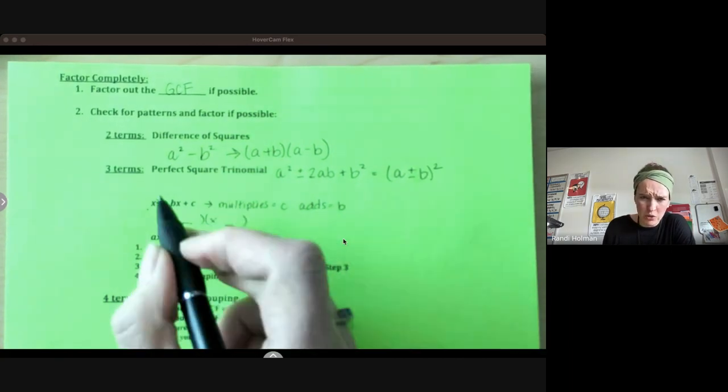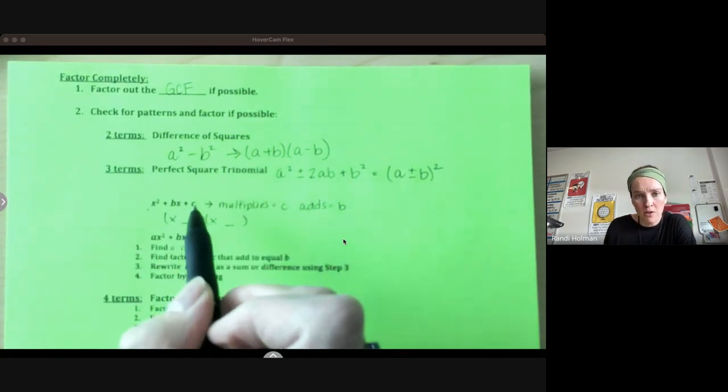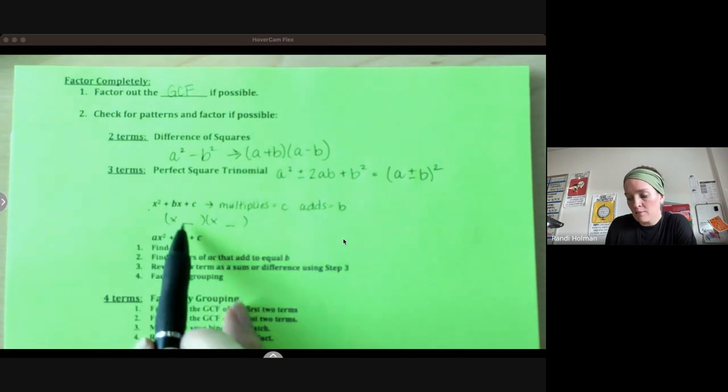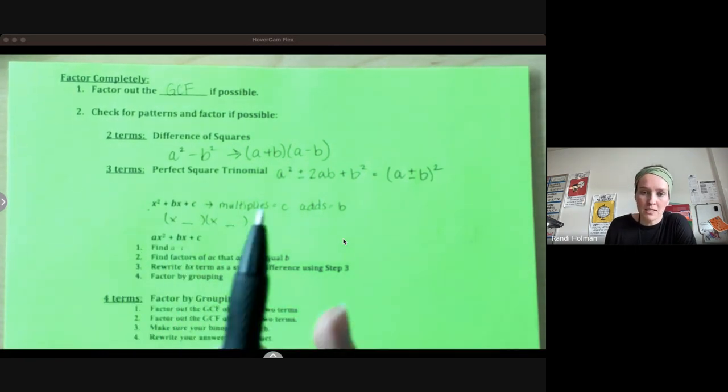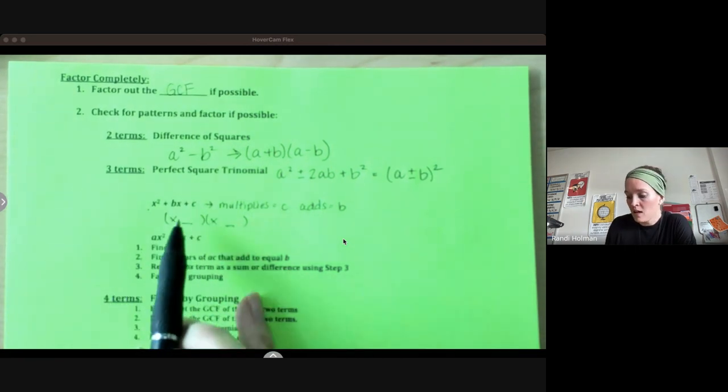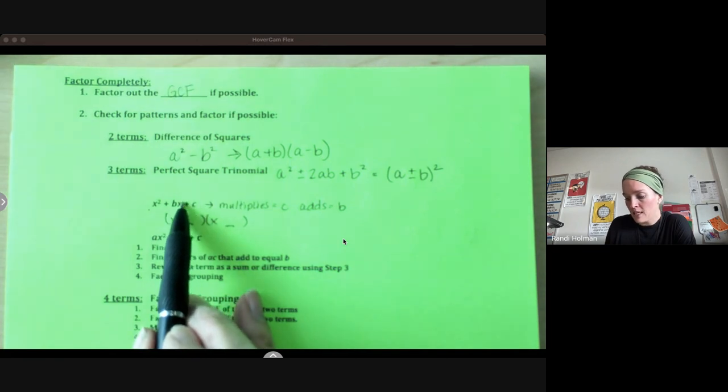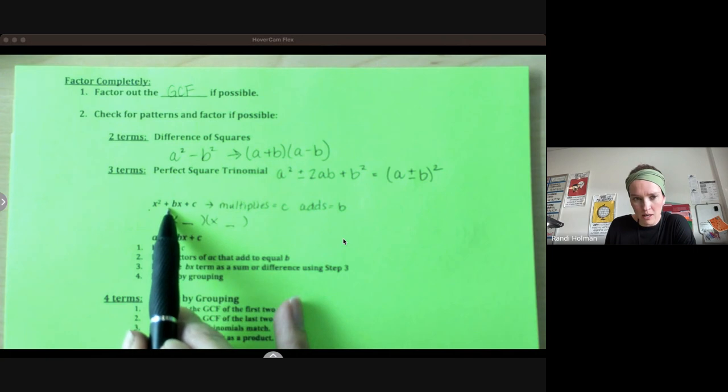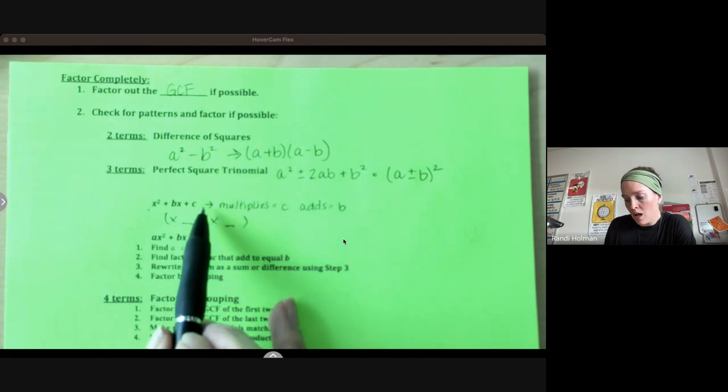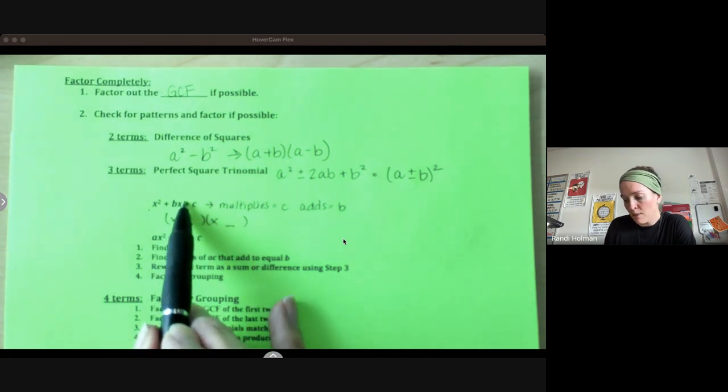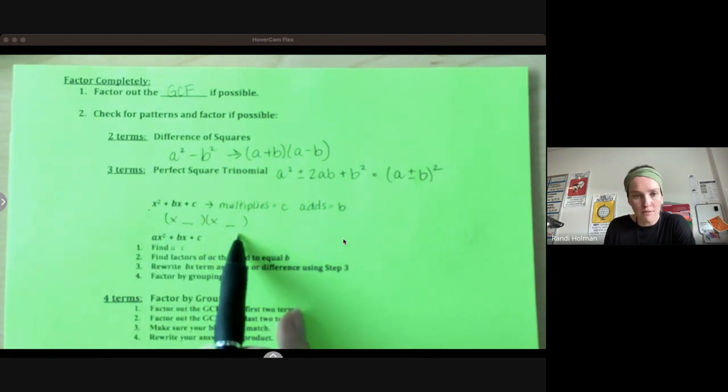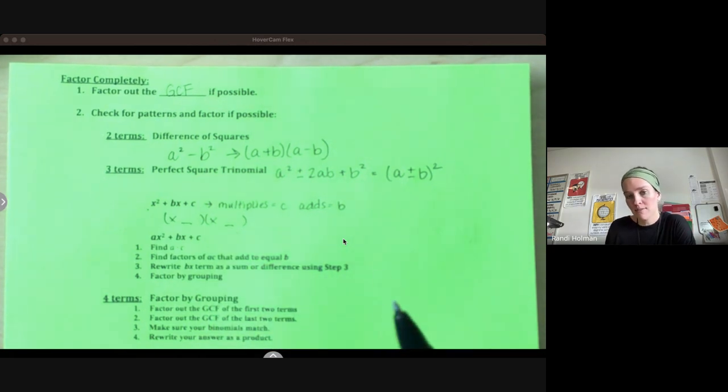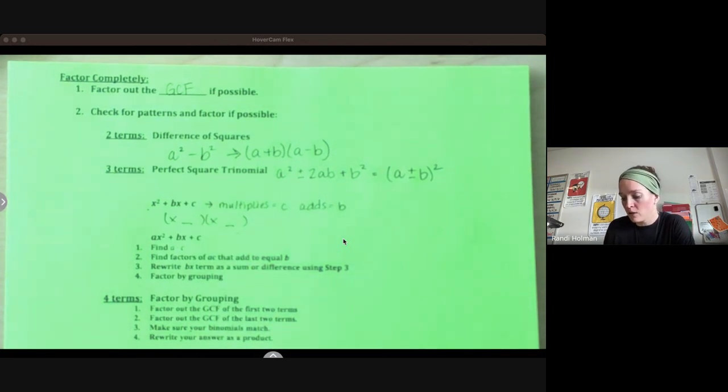Pay attention to your signs here. That can be really helpful if you have a positive positive. Both of these are positive because they multiply to be positive and they add to be a positive. If you have a negative c, one's positive, one's negative. You can figure out which one's which by looking at your b value. Whichever one matches your b value sign is the larger value. If c is positive and b is negative, then they both have to be negative because they multiply to be a positive, add to be a negative. So keep those things in mind when you're looking at those numbers.